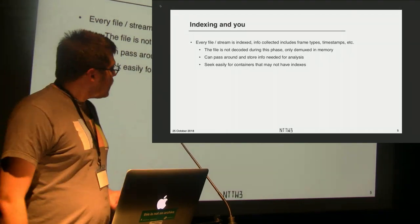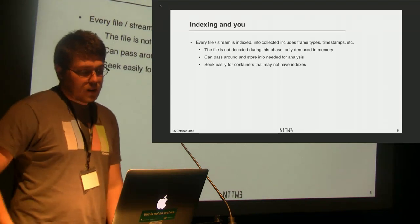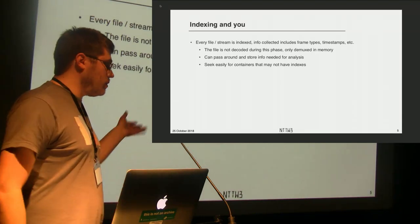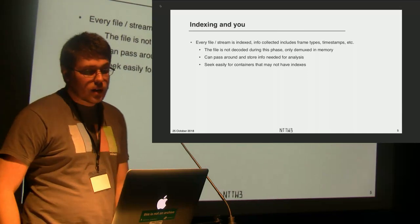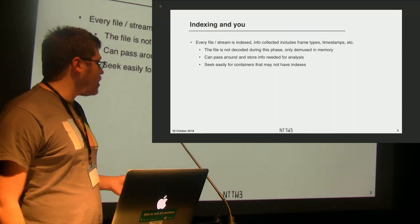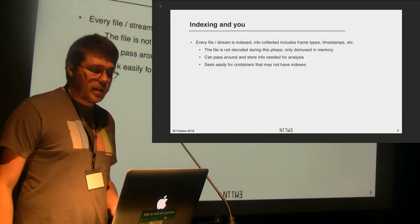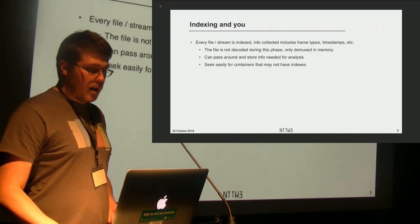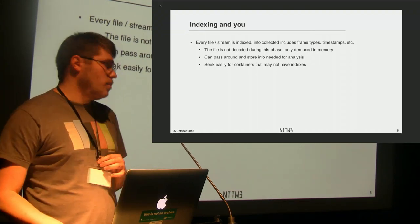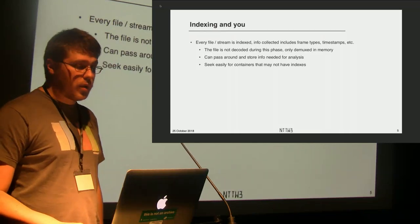Indexing is the first thing we do when we get a file. We don't want to constantly open 200-gigabyte files over a network. Do an index, store it somewhere — it should be around 200 kilobytes — and index all the frame types, timestamps, and so on. This is not decoding, so you won't get block-level reference data or easy support for content with no keyframes. It's mainly for ease of passing around and is much faster than a full decode.